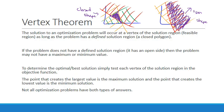As long as a problem has a defined solution region, then our solution will occur at one of those vertices. If the problem does not have a defined solution region, it has an open side, then the problem may not have a maximum or minimum. It will have maybe one, but not the other. To determine the optimal or best solution, simply test each vertex of the solution region in the objective function. The point that creates the largest value is the maximum solution, and the point that creates the lowest value is the minimum solution. Not all optimization problems have both types of answers.